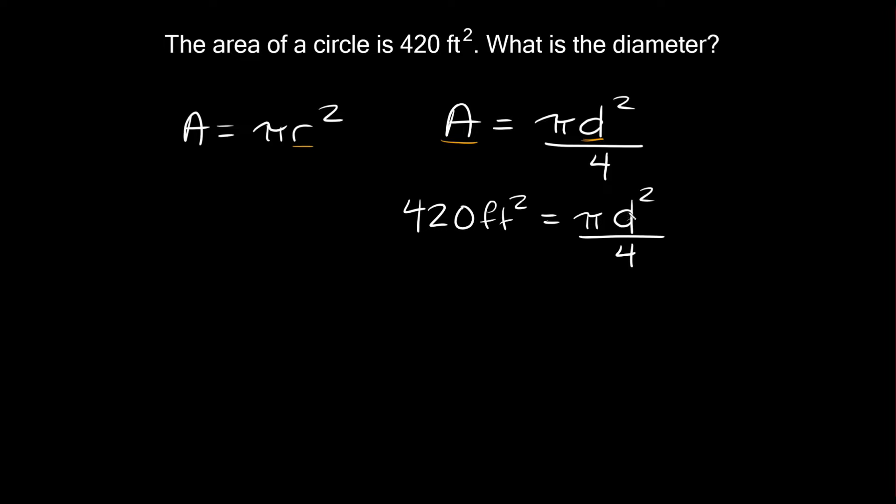We're trying to solve for d, so we're trying to isolate it. Let's get rid of the denominator, this 4, by multiplying both sides by 4. On this side the 4 on the bottom and top cancel out. On this side 4 times 420 equals 1680 feet squared, and that equals pi times d squared.